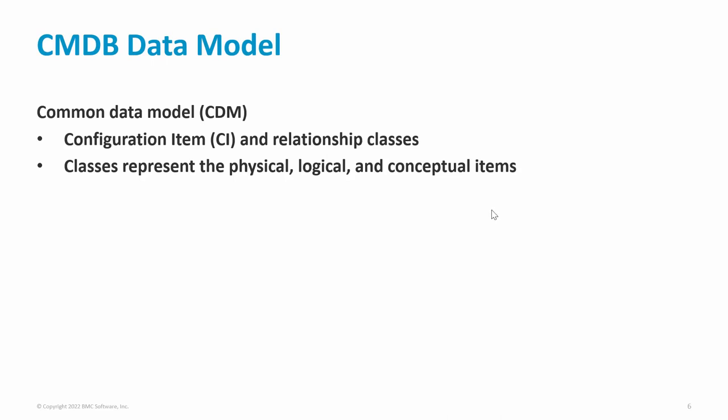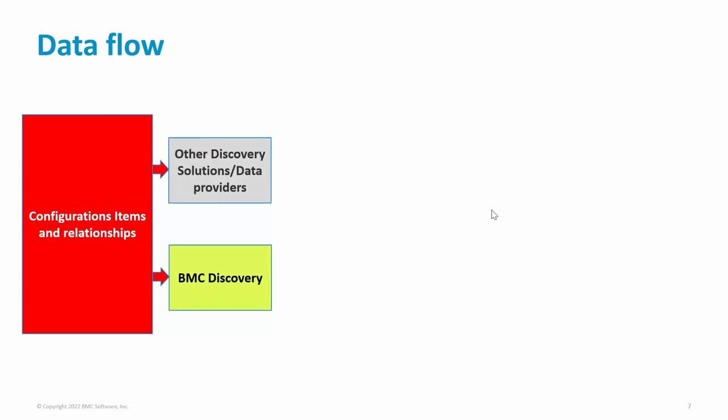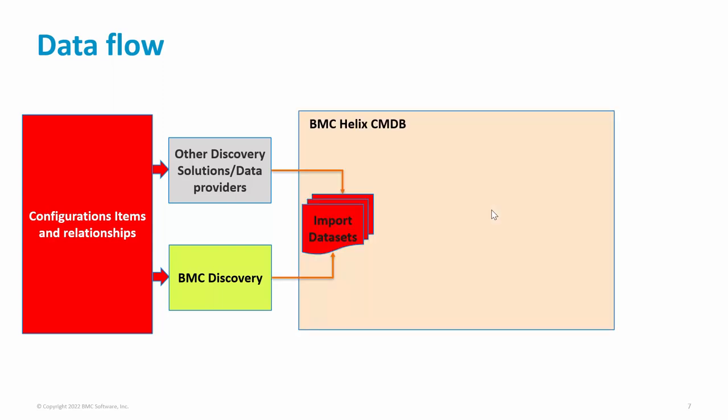Now that we have understood what is BMC Discovery and what is BMC Helix CMDB, let's talk about how these two can help you manage end-to-end data flow for your IT operations and service management. Let's say you have an IT environment with configuration items and relationships, and to discover these details, you will use BMC Discovery or some other discovery solutions or data providers. Once the CI data and relationships have been discovered, the discovered data can be imported to BMC Helix CMDB import data sets. An import data set contains the data in its unprocessed form and cannot be used for ITIL processes unless the data is normalized and reconciled. Once the data has been imported, the first thing you would need to do is run a normalization.